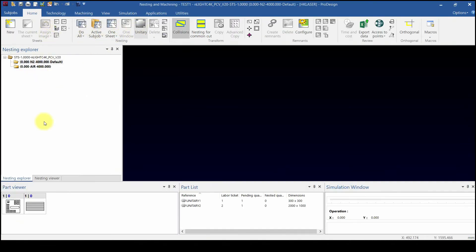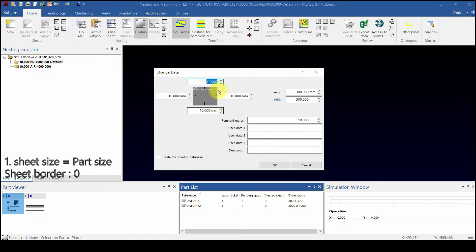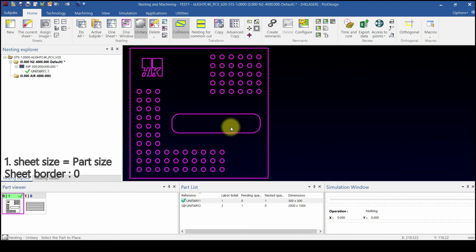How to use Unitary. First, select Unitary icon and select the part. Set the margin in Sheet Border. Sheet size is same as part exterior size. Sheet Border is zero. Nesting like this.